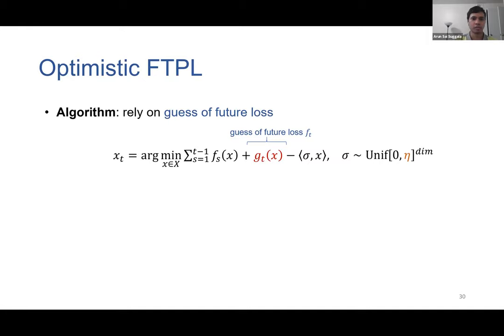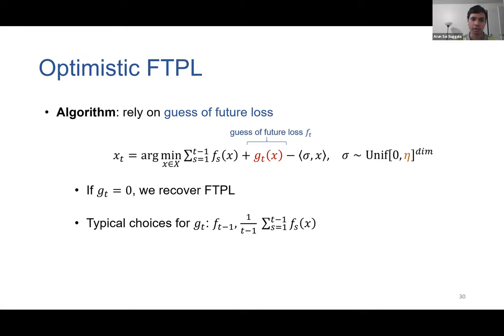Let me describe the Optimistic FTPL (OFTPL) algorithm. It is a slight modification of FTPL: the prediction of the learner in iteration t is obtained by solving a similar objective, except with an additional term gt, which is our guess for the future loss function at time t. The random perturbation sigma is now drawn uniformly from a hypercube of length eta. If gt is zero, we recover FTPL. If our guess is good, we can expect the regret of OFTPL to be small, and we show the regret depends on the quality of our guess.